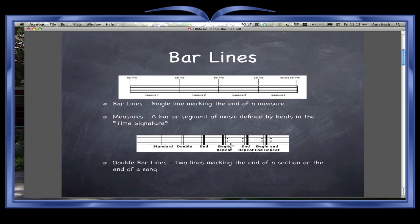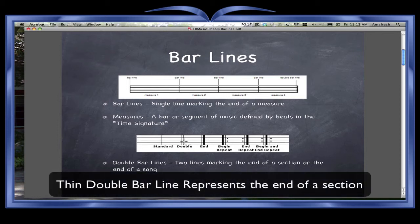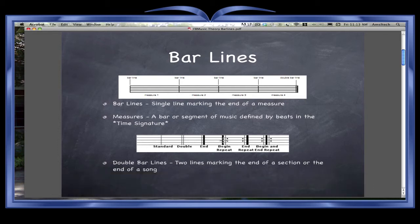There are a couple of types of double bar lines. The first one you'll most commonly see is one that ends a song. As it's said, a double bar line is two lines marking the end of a section or the end of a song. You'll also see bar lines that signify begin repeats and end repeats, or even back to back — something that resembles a back-to-back double end, or begin and repeat. I'll explain repeats in the next lesson.